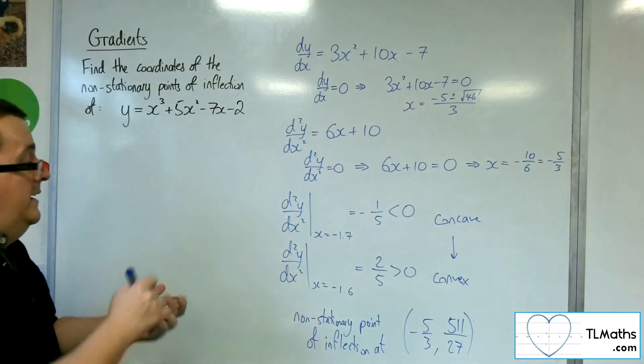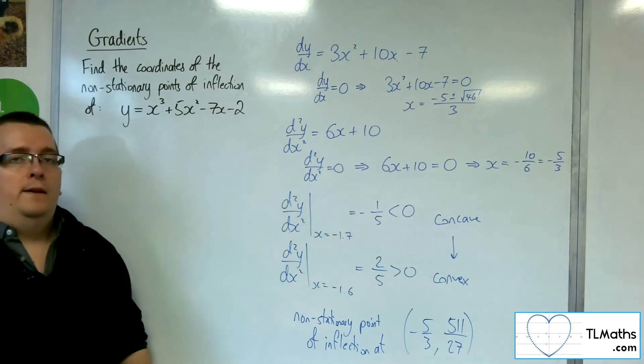And that's 511 over 27. That is definitely a non-stationary point of inflection for that curve.